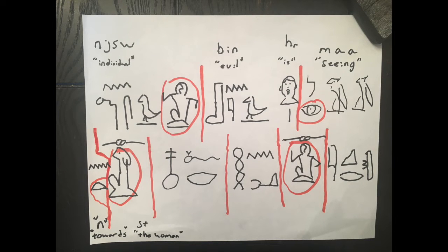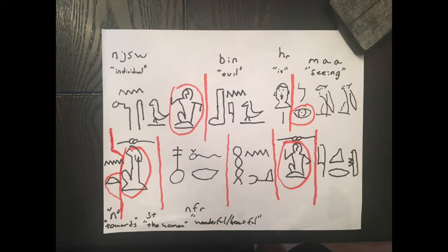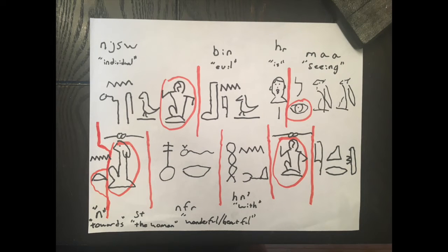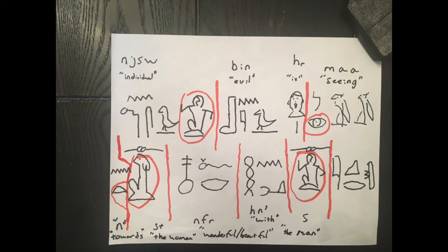Now we have 'en,' which means towards a person — towards. Then we have the T, the S with the T, and then a determinative of a woman, which means 'the woman' or 'a woman.' There are no definite articles in Egyptian, so it could be the woman, a woman, or just woman. Now we have our description of that woman: 'nefer,' which means wonderful or beautiful — context will tell you which to use. The adjective comes after, so it's a beautiful woman. Then we have 'hana,' which is 'with.' So the beautiful woman is with someone.